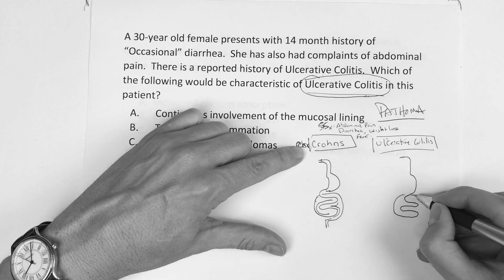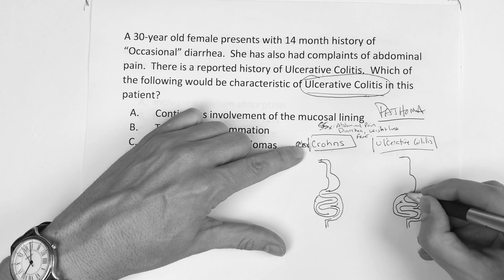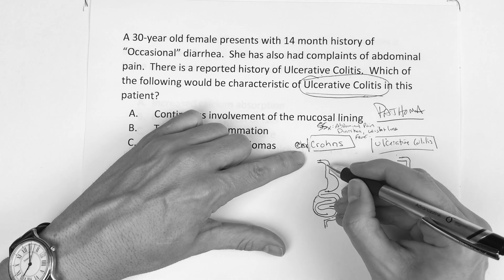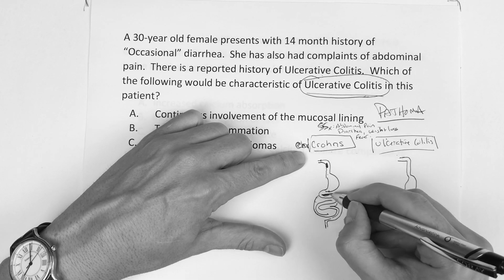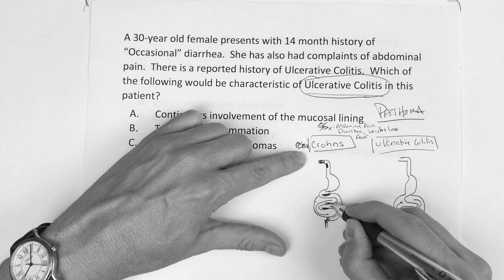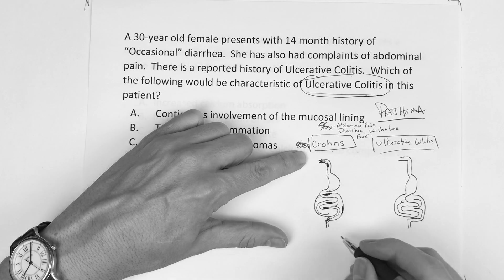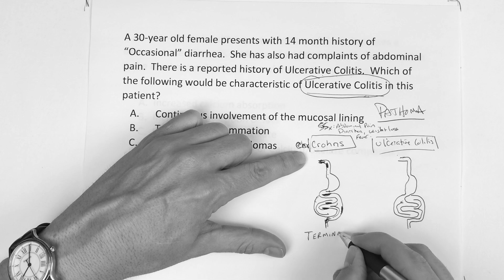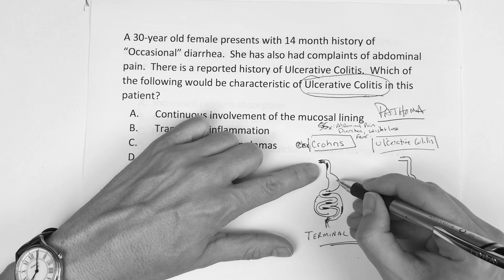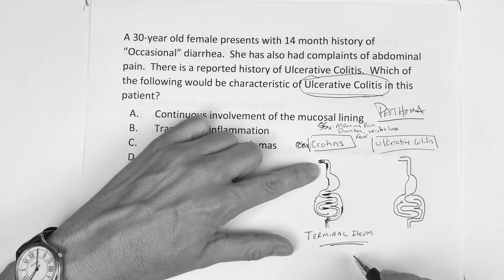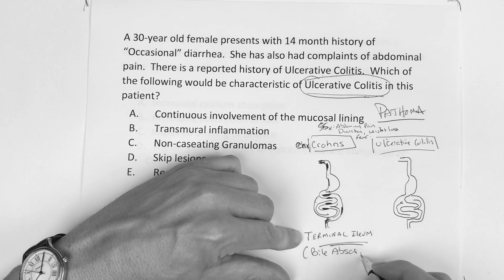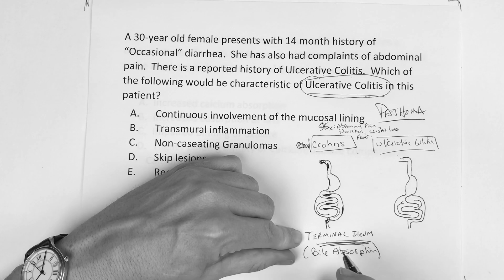The question becomes: where do these diseases occur? In Crohn's, you can have it anywhere from the mouth region all the way down to the bottom — it can be anywhere. There are a couple of spots it really likes to hit, and the one I want you to really focus on is the terminal ileum. The main importance there is that's where bile absorption occurs, and if you've got an issue in that area, there are downstream consequences.